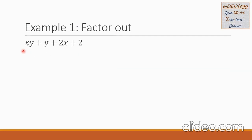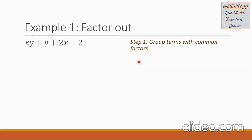Let us have example 1: factor the four terms xy plus y plus 2x plus 2. In step 1, we're going to group terms with common factors. So I'm going to group the first two terms — xy plus y — and the last two terms — 2x plus 2.